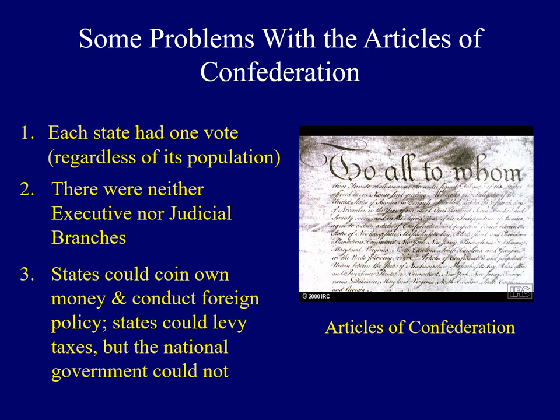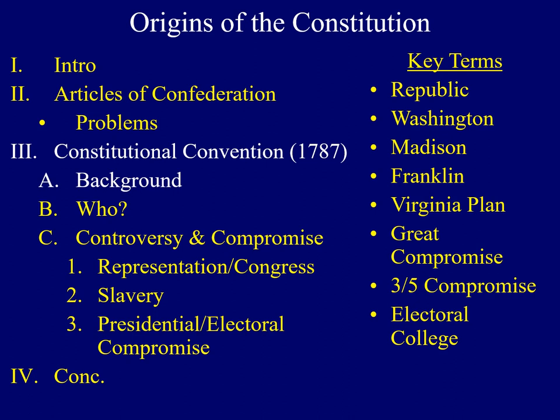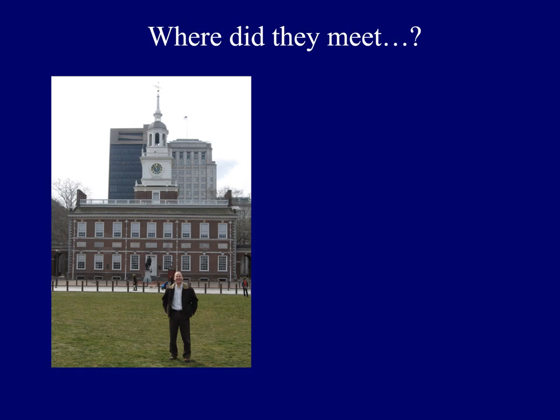Taken collectively, these range of problems with the Articles prompted some to want to try to modify those Articles or maybe even start from scratch. The fancy name for the meeting to try to modify the Articles of Confederation is called the Constitutional Convention. Delegates met in 1787.